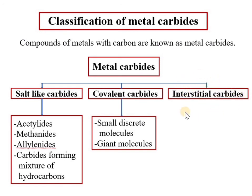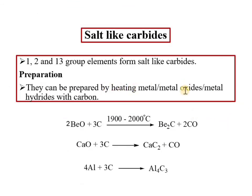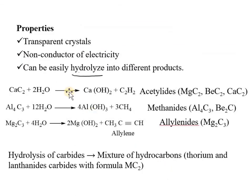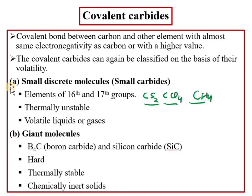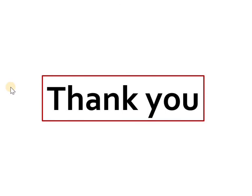Interstitial carbides are formed by transition metal elements. Regarding the preparation method, metal oxide or metal hydride reacts with carbon at high temperature to form the carbides. This covers metal carbides — their synthesis, classification, properties, and applications. In the next lecture we will discuss metal nitrides. Thank you very much.